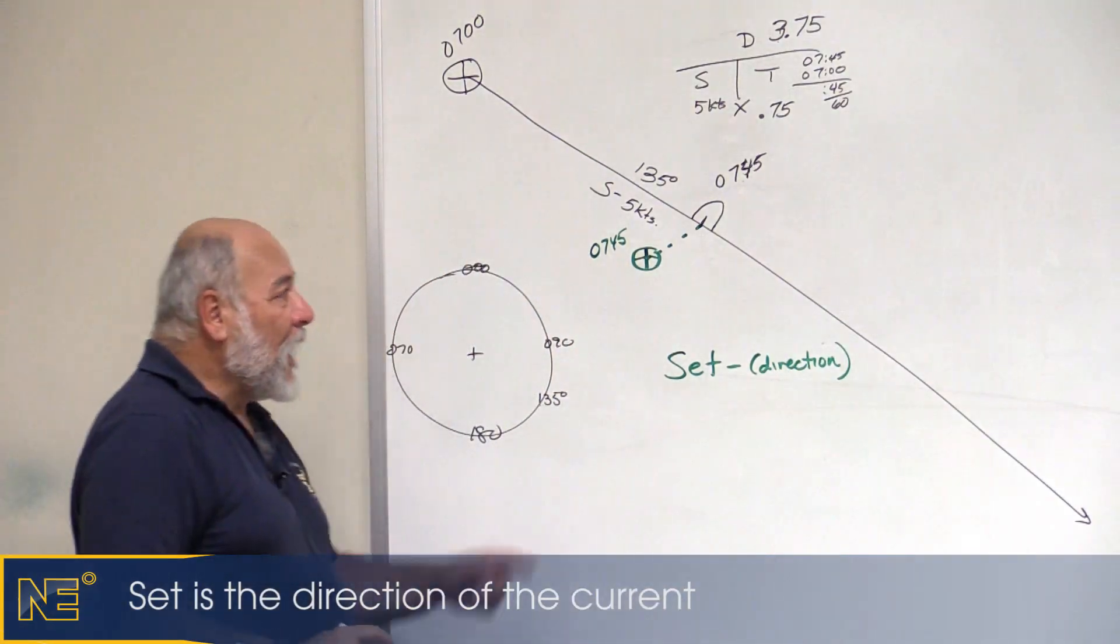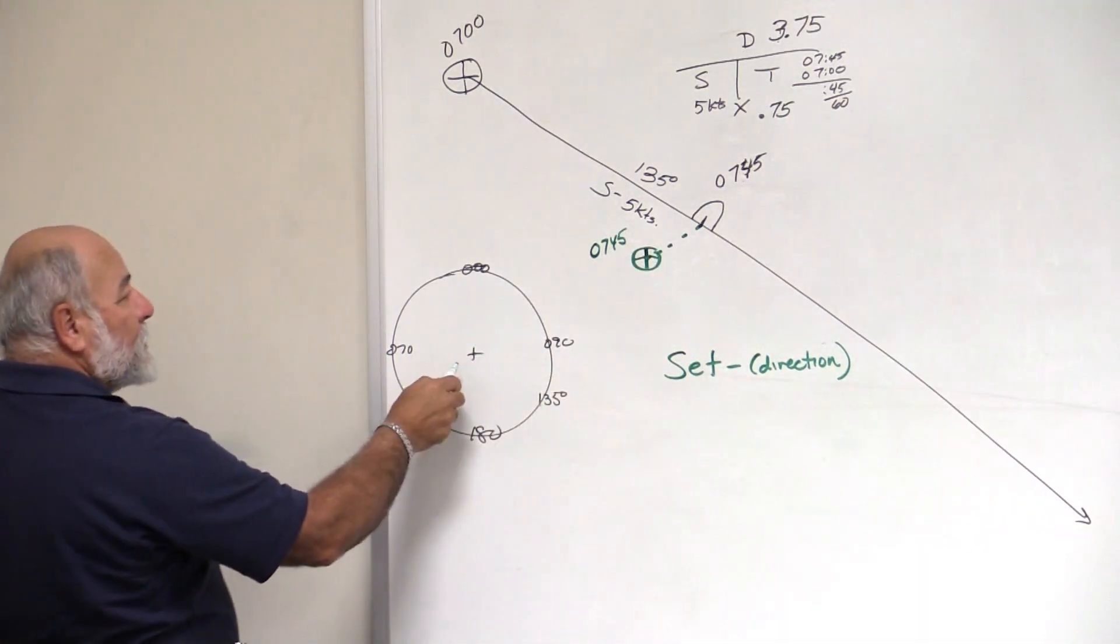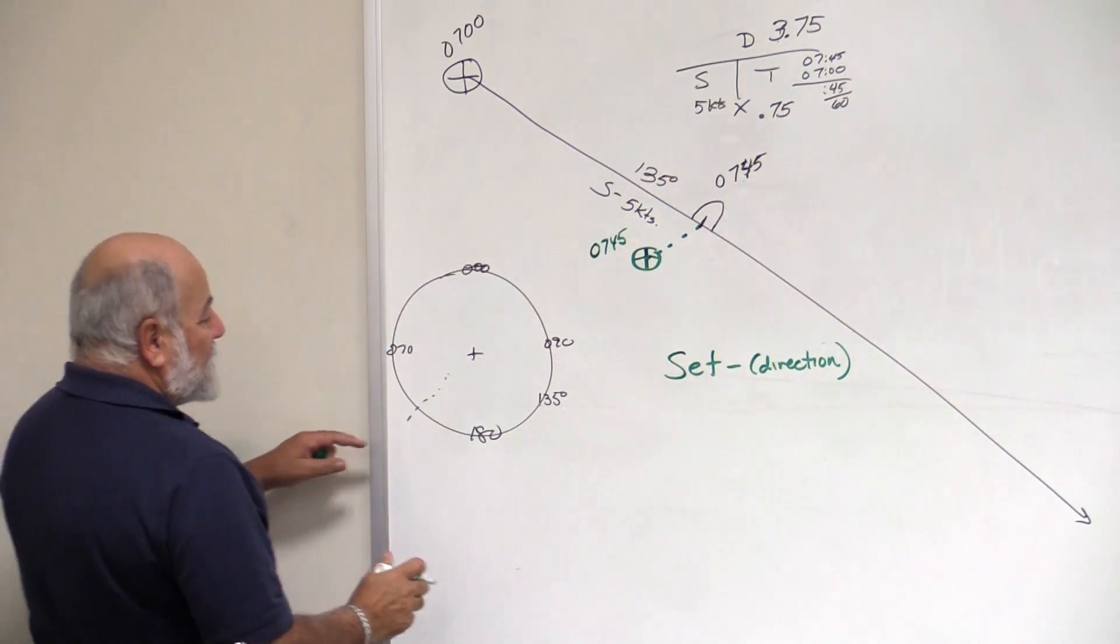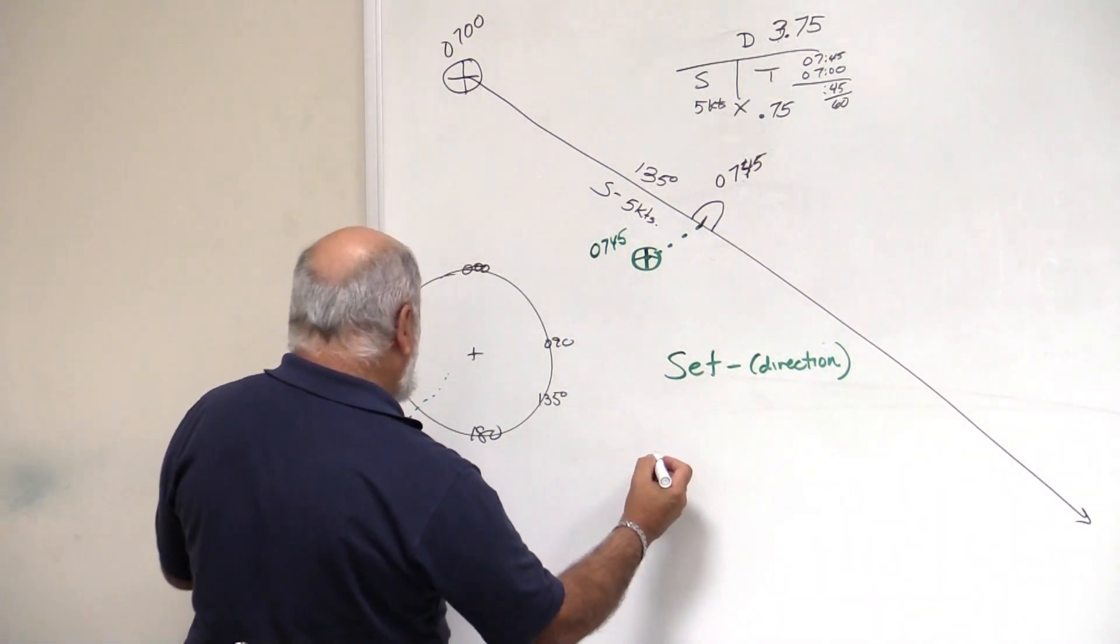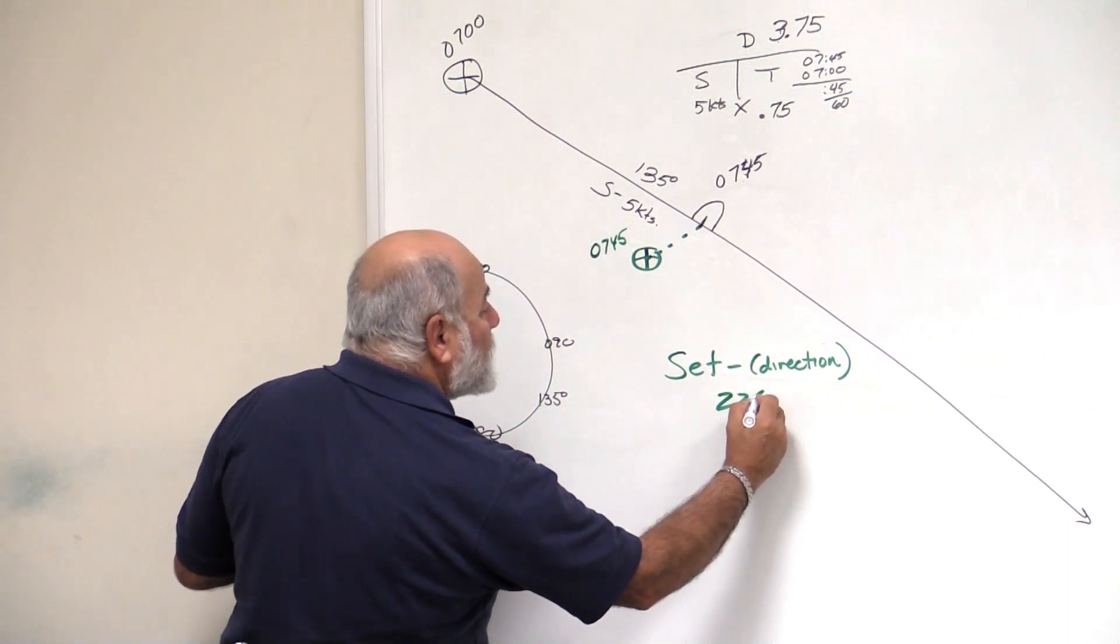That's the set. Set, that is the direction of the current, the direction that the current is flowing. How do you figure that out? You take that, you roll it to the compass rose, you go through the compass rose, and you find out that, for the sake of discussion, we're set at 220 degrees.